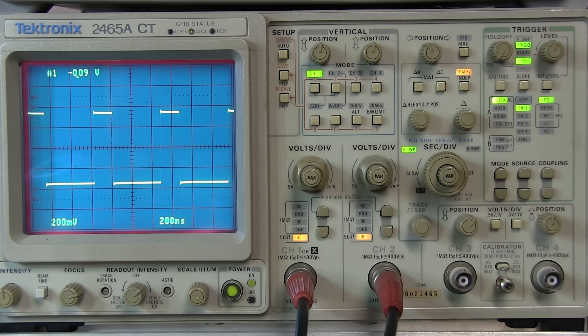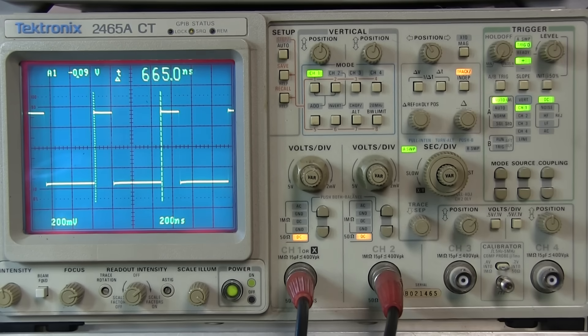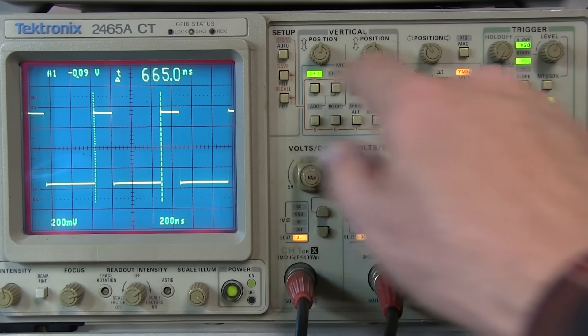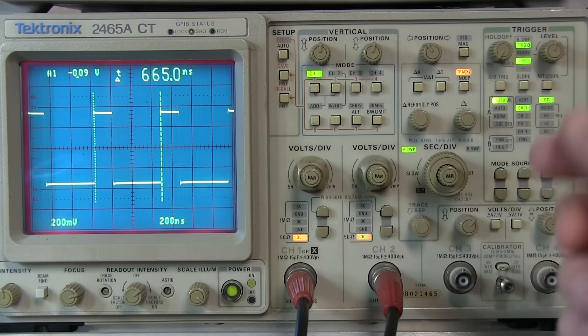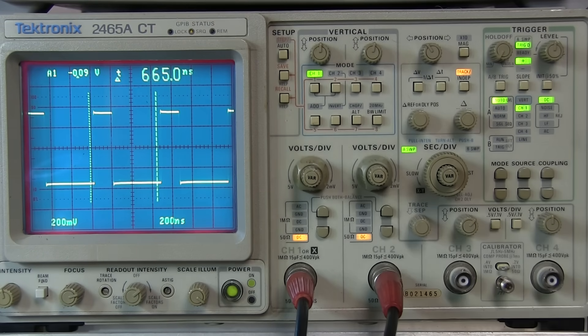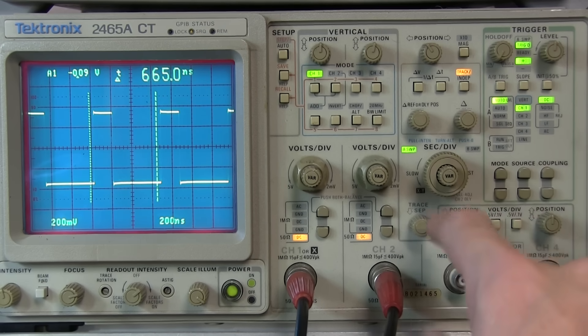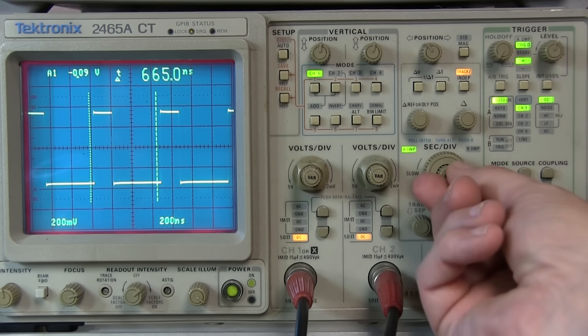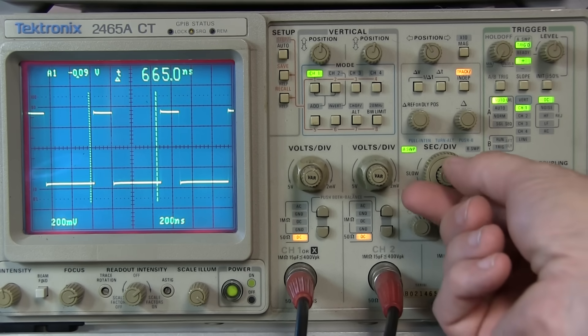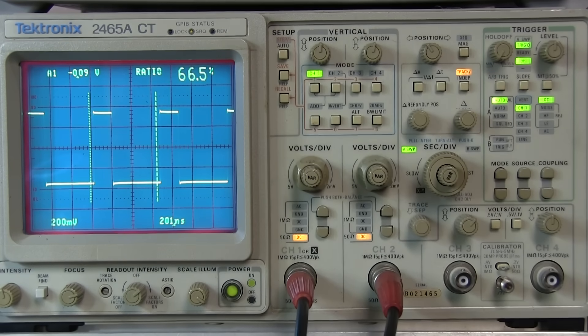So next, let's take a look at the additional functions for the delta T. So let's turn the delta T on here. And again, by just hitting it once, I'm essentially getting my delta T number and the absolute value because I'm in a calibrated horizontal scale. Now, similarly, when I take the horizontal out of the calibrated mode by rotating this VAR knob counterclockwise, now we can actually see that I get a ratio number horizontally.